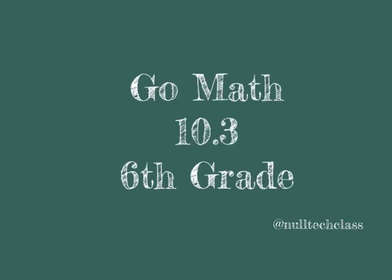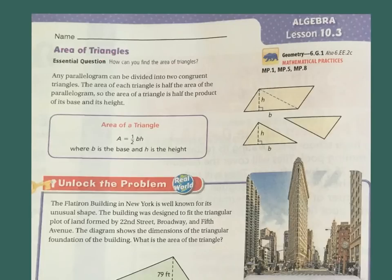Good morning. Today's lesson is 10.3, area of triangles. Our essential question: how can you find the area of triangles? Well, any parallelogram can be divided into two congruent triangles. That means equal triangles. The area of each triangle is half the area of a parallelogram. So the area of a triangle is half the product of its base and its height. So area equals half base height, where b is the base and h is the height.